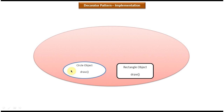Now we will see the scenario where we can use the Decorator Design Pattern. Here you can see the Circle object — it has a draw method. When we use the draw method, it will draw the circle without any color. And here you can see the Rectangle object — it also has a draw method. When you use the draw method, it will draw the rectangle without any color.